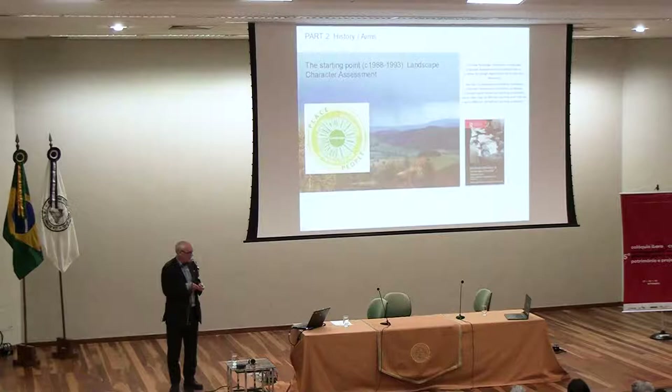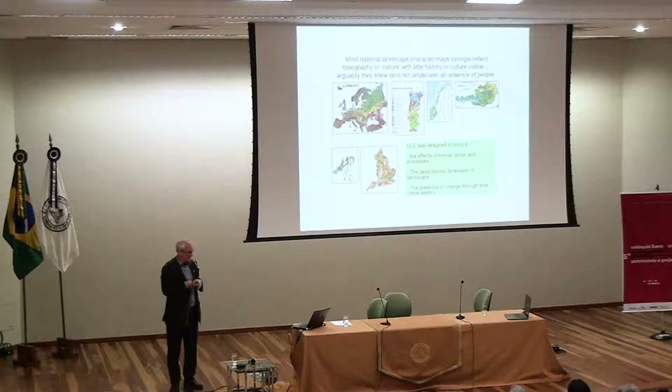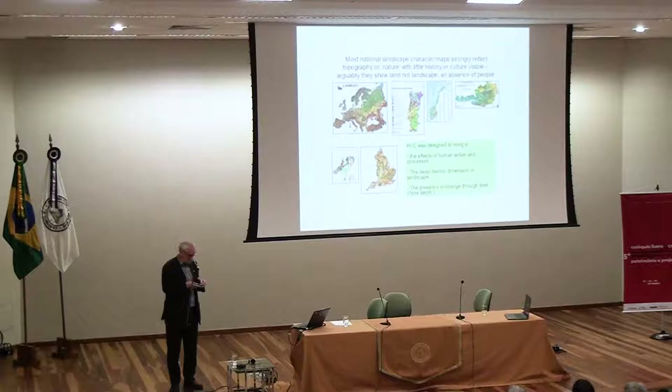Recently, with a couple of colleagues, I've brought together examples of both landscape character assessment and HLC from mainly Europe and a few other parts of the world. These are examples at national scale in Europe — Portugal, Norway, Austria, Netherlands, and England again. National maps of landscape character assessment are really useful for all sorts of management purposes, but when you look hard at them it's difficult to see anything other than topography, nature, and visual appreciations. That's why we felt the need to do HLC.